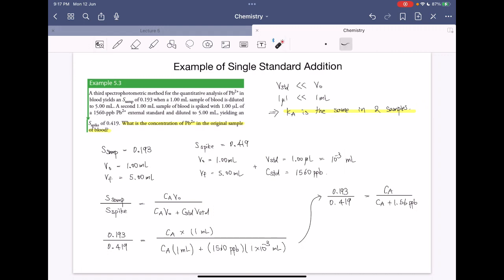Then we're going to multiply both hand sides, like cross multiply like this. Then we have 0.193 times CA plus 1.56 is equal to 0.419 CA.